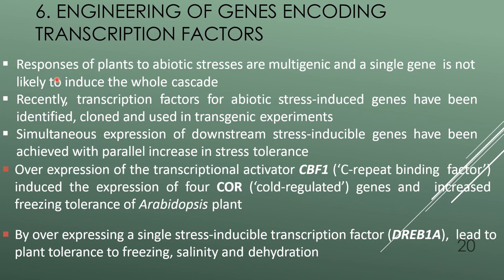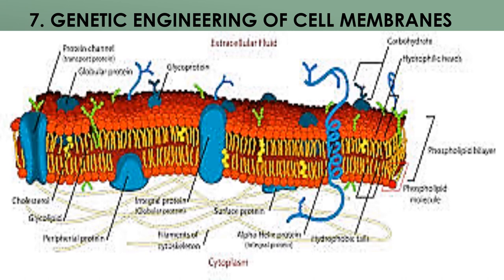Engineering of genes encoding transcription factors: responses of plants to abiotic stress are multigenic and a single gene is not likely to induce the whole cascade. Recently, transcription factors for abiotic stress-induced genes have been identified, cloned, and used in transgenic experiments, simultaneously expressing downstream stress-induced genes with parallel increases in stress tolerance. Overexpression of transcriptional activator CBF1 — C-repeat binding factor — induced expression of four COR cold-regulated genes and increased freezing tolerance of Arabidopsis. Overexpression of the single stress-inducible transcription factor DREB1A led to plant tolerance to freezing, salinity, and dehydration.